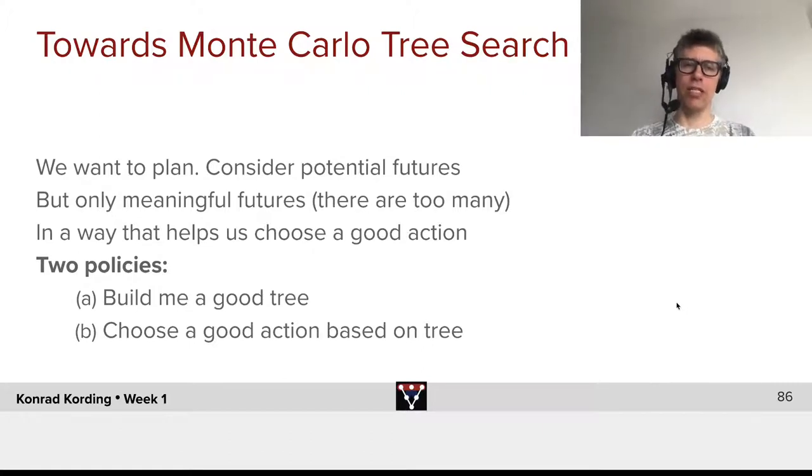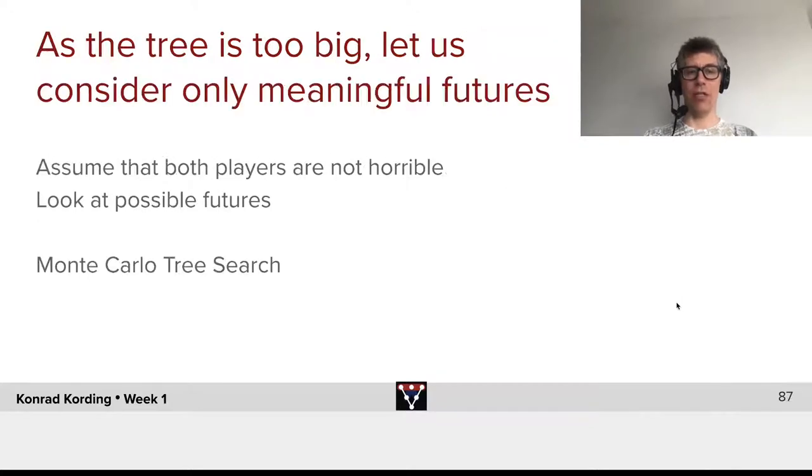In a way that helps us choose a good action, we want to look at the futures that are relevant for what we can do now. Now there's two policies involved here. The first one is build me a good tree, a tree that is informative about what I should do. The second one is choose a good action based on the tree.